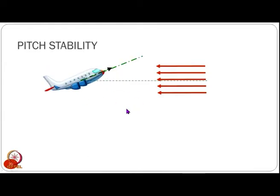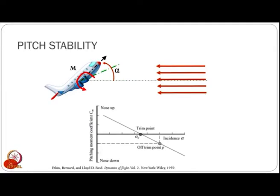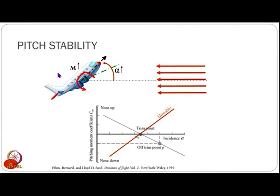In the other case, when we have a positive angle of attack and the pitching moment is also in the positive direction, a non-zero angle of attack would make it nose up even more. So the angle of attack and the pitching moment basically just increase. The pitching moment curve versus the angle of attack would be in the opposite direction. Because we have a non-zero angle of attack and do not generate a restoring moment — rather a destabilizing moment — the moment also increases and thereby the angle of attack also increases. Such a system would be unstable.